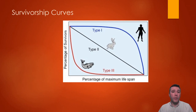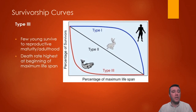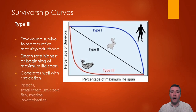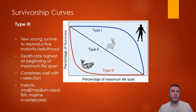A type 3 survivorship curve is one in which the death rate is highest for the youngest individuals. Very few newly created offspring survive to adulthood and reproductive maturity, but those that do are very likely to make it to their maximum lifespan. The characteristics of a type 3 species align well with R-selection, and therefore include examples such as insects, many kinds of marine invertebrates, as well as small fish.